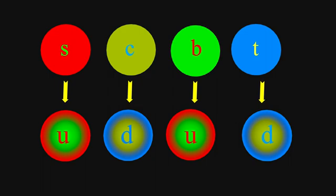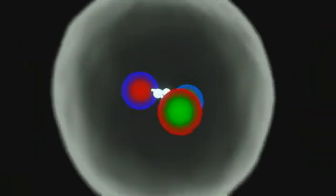Because of this, up and down quarks are generally stable and the most common in the universe.